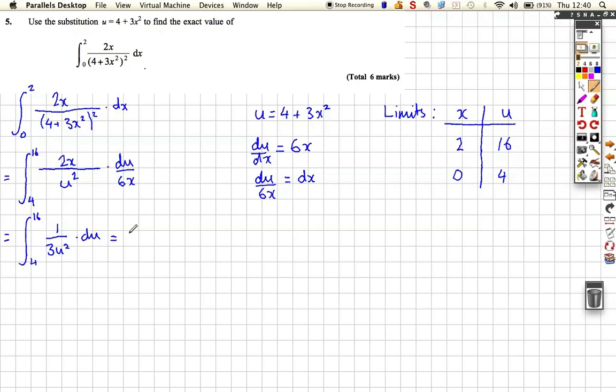So, I'm actually going to rewrite that in a slightly different way. I'm going to take the third out of the integration, because it's constant, and I'm going to have 4 to 16, and I'm going to bring the power of u to the top, makes my life easier, u to the minus 2, with respect to u. I've just brought the u up, so it makes it u to the minus 2, limits are the same, and I've taken a third out to the front.